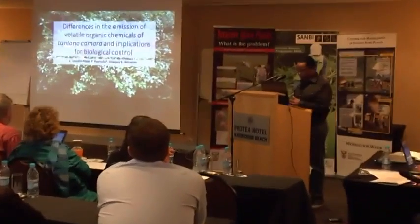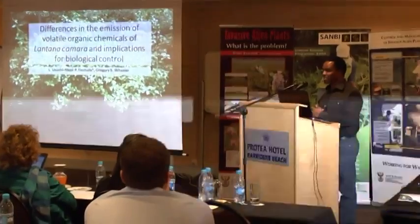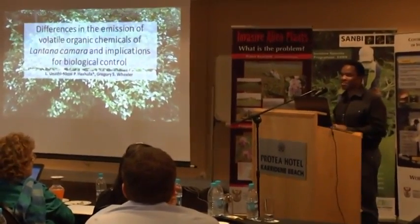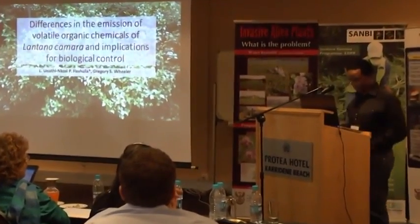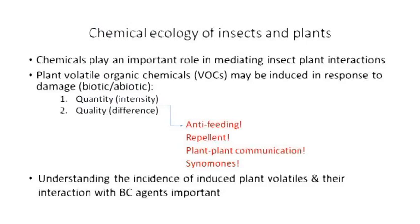Today I'd like to talk a little bit about whether we should consider chemicals, in particular volatile chemicals, in our biological control practice. To make a case for chemical ecology quickly, chemicals play an important role in terms of mediating insect and plant interactions.